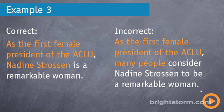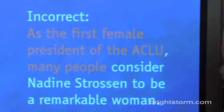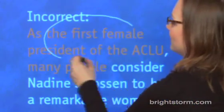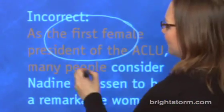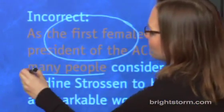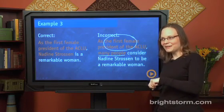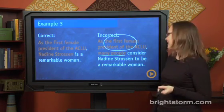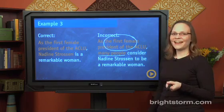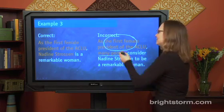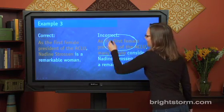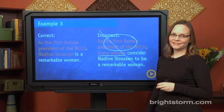But let's look at a similar version of the same sentence that's not correct: 'As the first female president of the ACLU, many people consider Nadine Strawson a remarkable woman.' Same modifier, but a different noun is being described. This sentence is actually saying that many people were the first president of the ACLU, and that's just not true. So this is also an answer choice that would be incorrect.